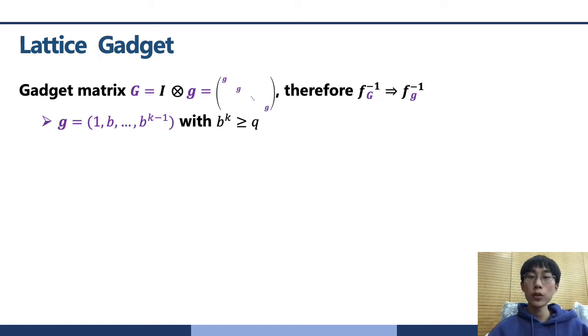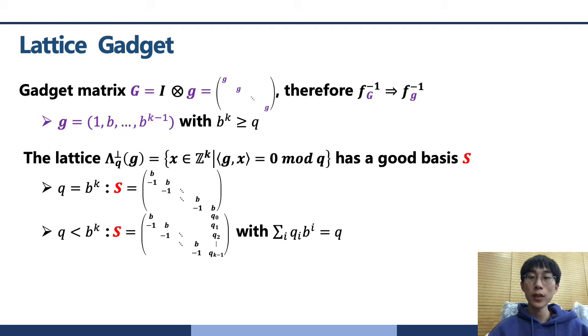The G matrix is a block diagonal matrix. The diagonal block is vector g. The corresponding gadget lattice has a good basis S. For the power of B modulus, the matrix is a lower bidiagonal matrix. And for arbitrary modulus, the matrix has other nonzero entries in the last column compared with before. Thanks to the good structure of the short basis of gadget lattice, the inverting of G is simple and fast.